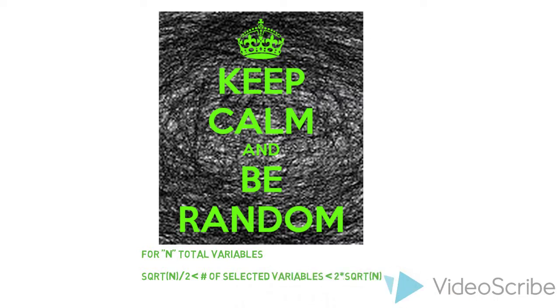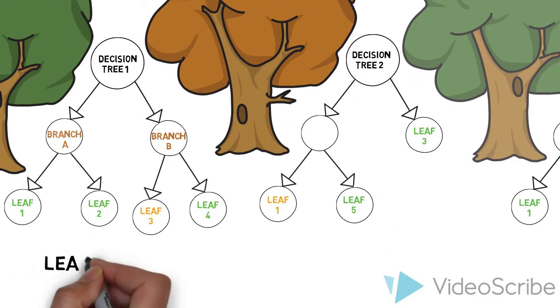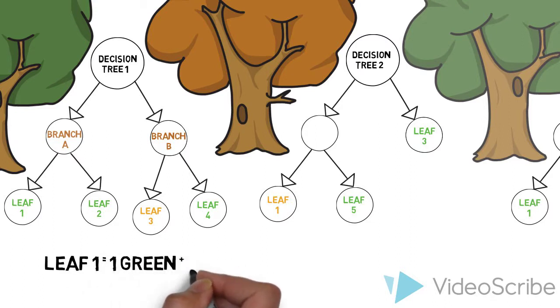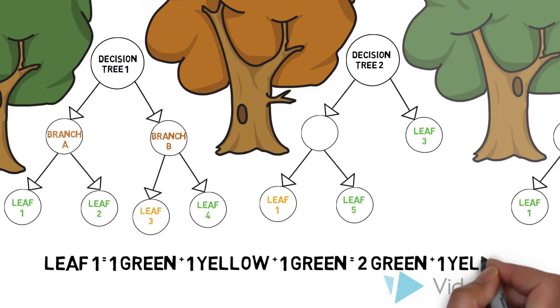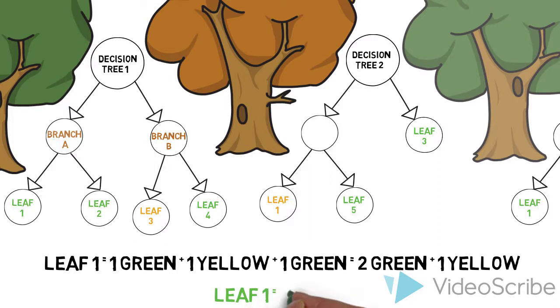The aggregation can be done in several ways but is usually done by voting between the trees, taking the most frequent prediction for classification or the average prediction for regression. This gives us a significantly lower variance without increasing bias.